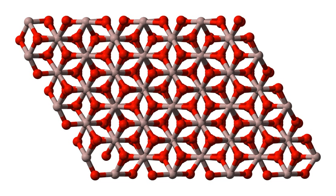Structure: The most common form of crystalline aluminium oxide is corundum, which is the thermodynamically stable form. The oxygen ions form a nearly hexagonal close-packed structure with aluminium ions filling two-thirds of the octahedral interstices. Each Al³⁺ center is octahedral. Corundum adopts a trigonal Bravais lattice with a space group of R3̄c (number 167). The primitive cell contains two formula units of aluminium oxide. Aluminium oxide also exists in other phases including cubic gamma and eta, monoclinic theta, hexagonal chi, and orthorhombic kappa and delta phases.